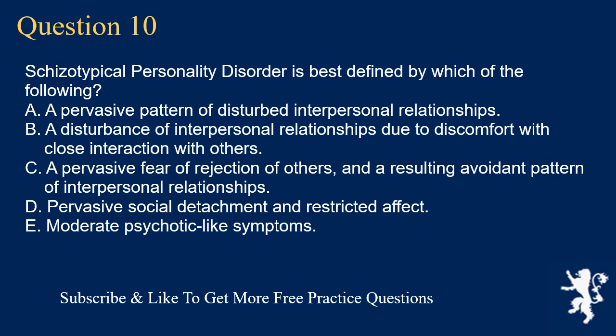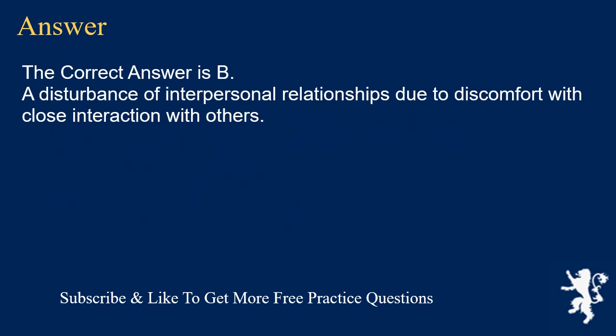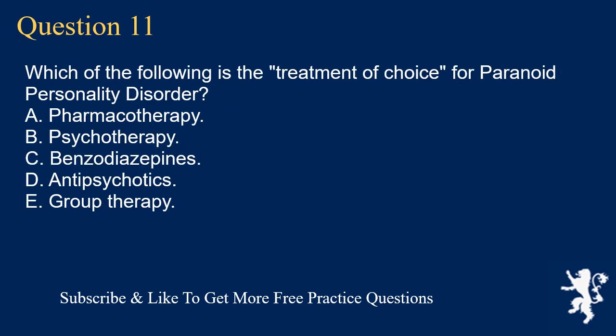Question 10. Schizotypal personality disorder is best defined by which of the following? A. A pervasive pattern of disturbed interpersonal relationships. B. A disturbance of interpersonal relationships due to discomfort with close interaction with others. C. A pervasive fear of rejection of others and a resulting avoidant pattern of interpersonal relationships. D. Pervasive social detachment and restricted affect. E. Moderate psychotic-like symptoms. The correct answer is B. A disturbance of interpersonal relationships due to discomfort with close interaction with others.